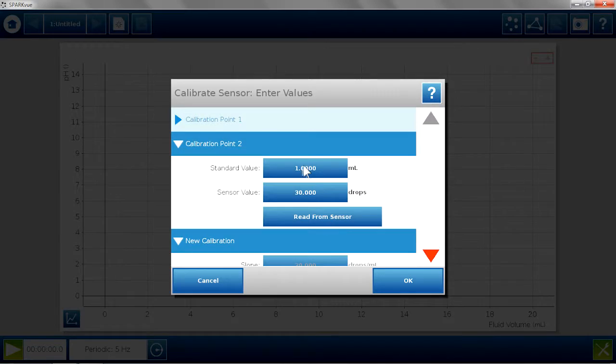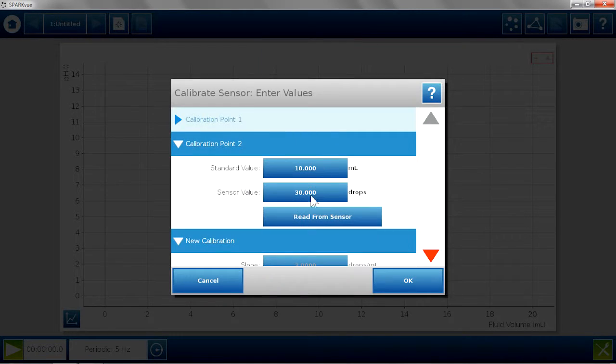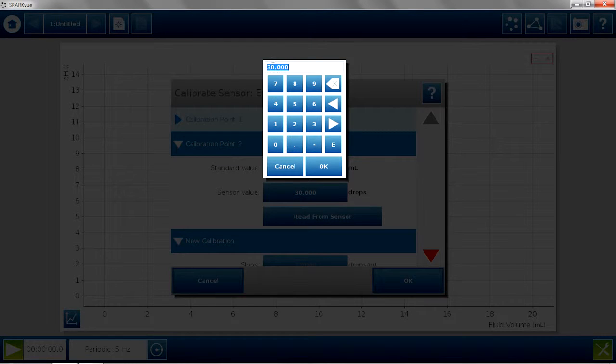I know that when I did this, there were in 10 mL of volume. The drop counter counted 327 drops, so I'm going to use that as my calibration.